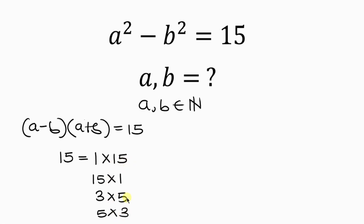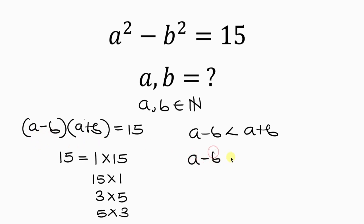Which of these factors of 15 represent the two factors on the left? We know that A minus B is always smaller than A plus B. So A minus B will represent the smaller factor of 15, while A plus B will represent the bigger factor of 15.